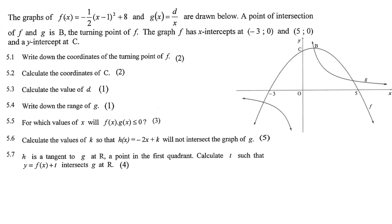The graphs of f and g are given: f is a parabola, g is a hyperbola. A point of intersection b is also the turning point of f.